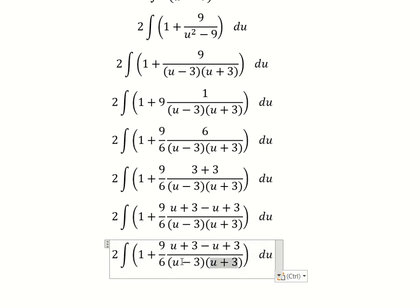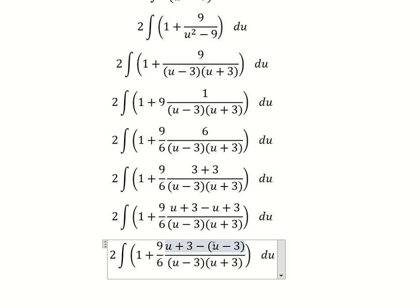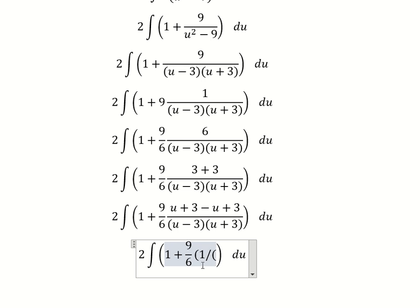So we have 1 over u minus 3. We can rewrite the second term with u minus 3 in the denominator. Dividing these terms gives 1, so we have this result.